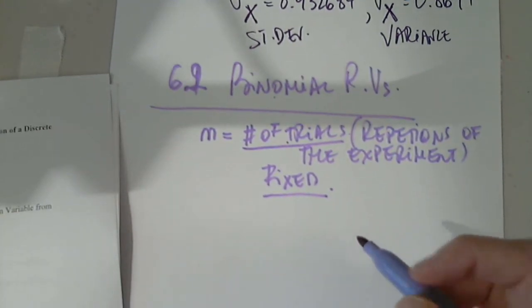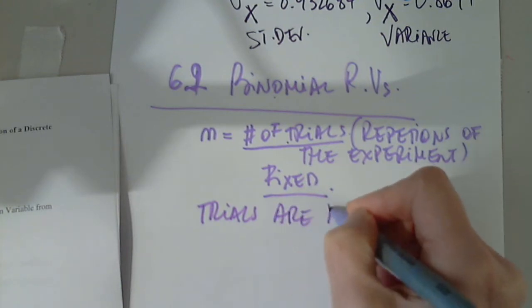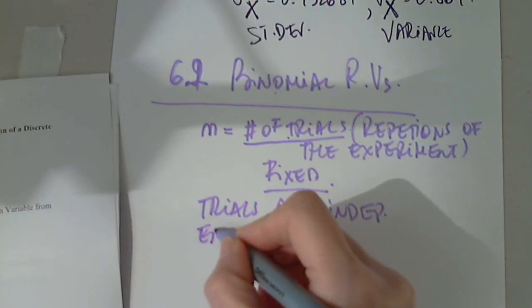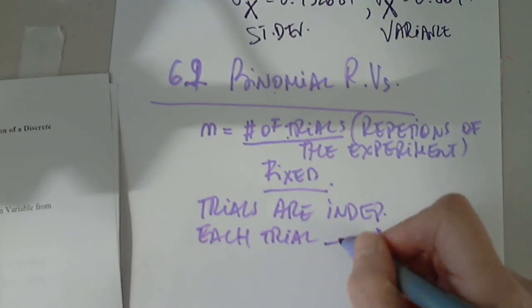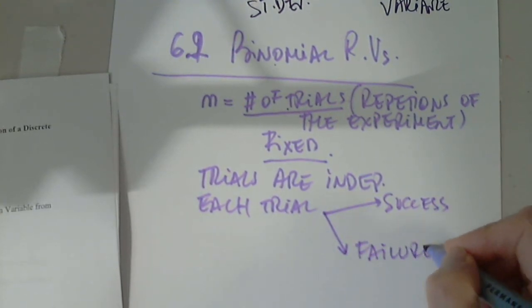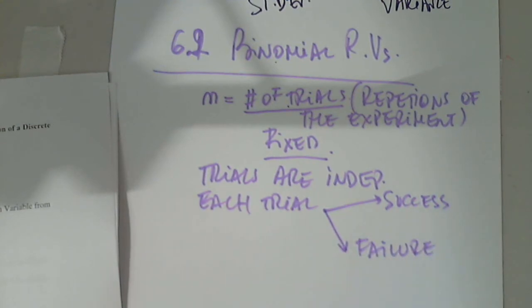Then they have to always have to be independent. Trials are independent. If they're not, it's not a binomial random variable. Each trial can have only two possibilities, either success or failure. There is not a third one or a fourth one or a fifth one. Like for example, I roll a die. Each trial has six possibilities, not failure and success, unless I define failures and success differently. Maybe I consider success an odd number and a failure an even number. Then it becomes a binomial experiment. But if I have six possible outcomes for each trial, no. I can only have yes or no.